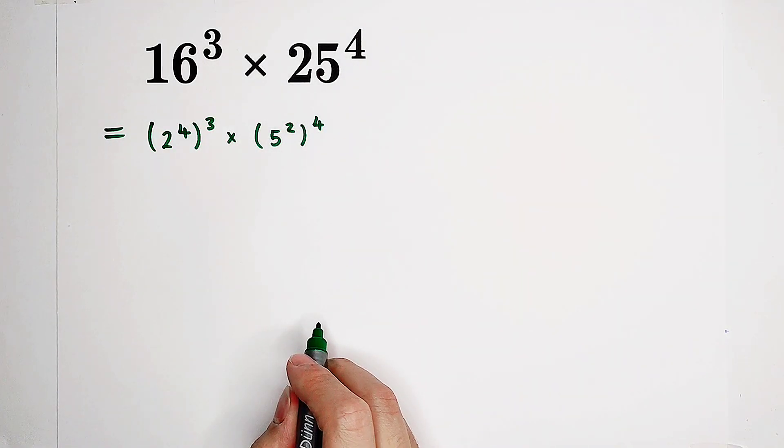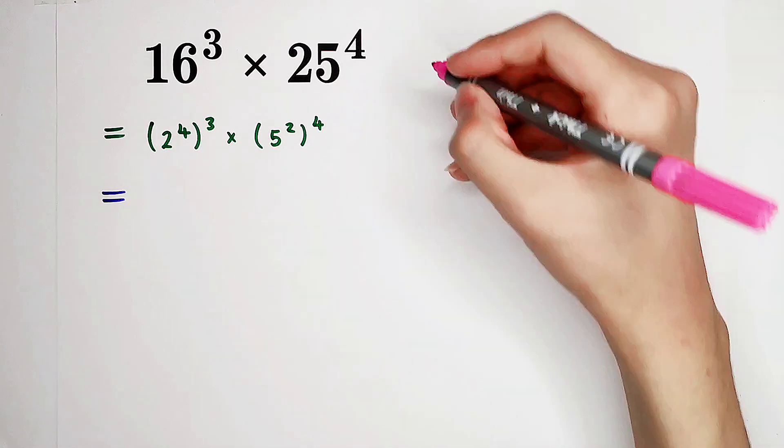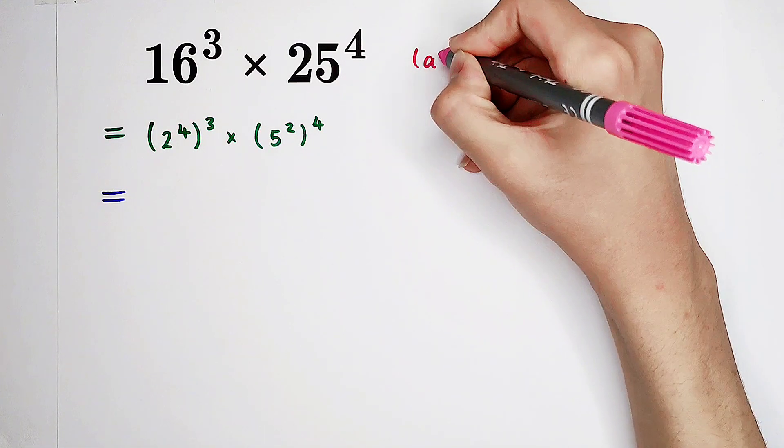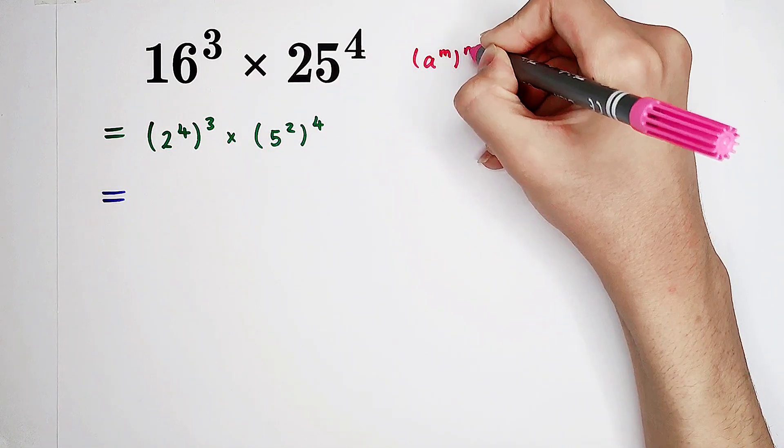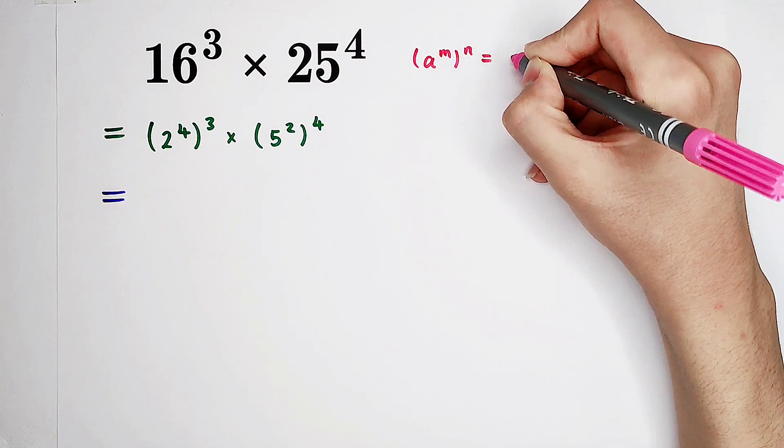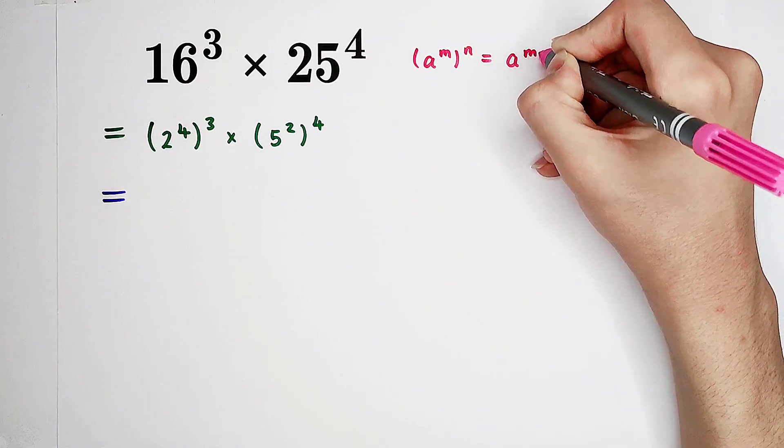So now, we've written them. In this step, we use a formula. a to the power of m, then all to the power of n, equals a to the power of m times n.